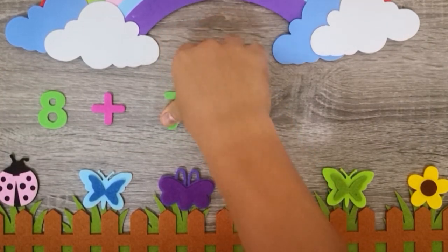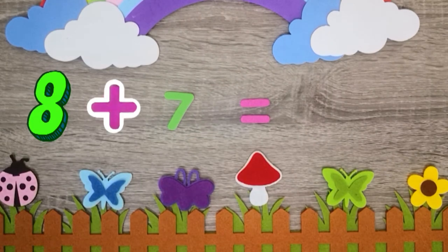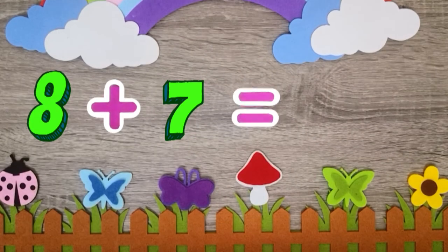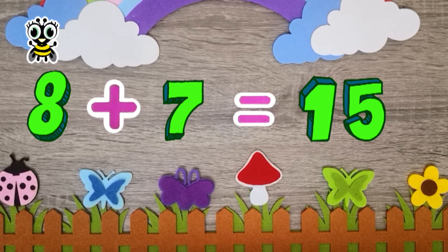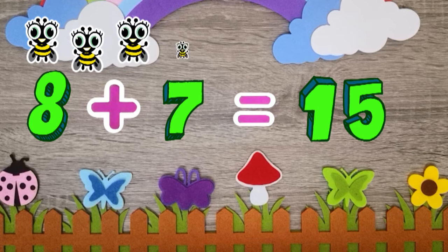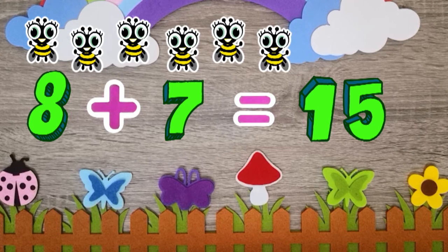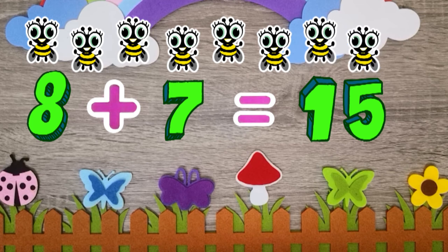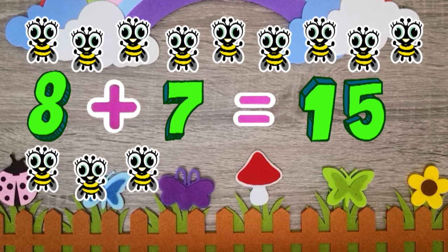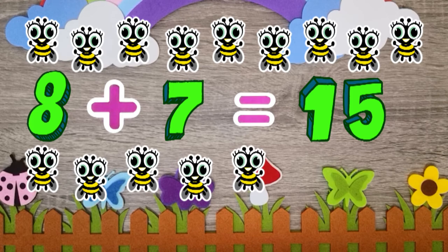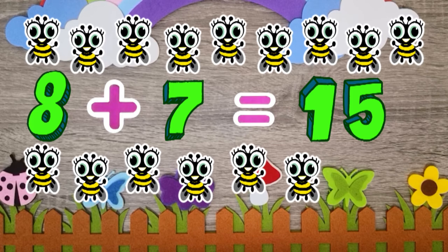8 plus 7 equals 15. 1, 2, 3, 4, 5, 6, 7, 8, 9, 10, 11, 12, 13, 14, 15.